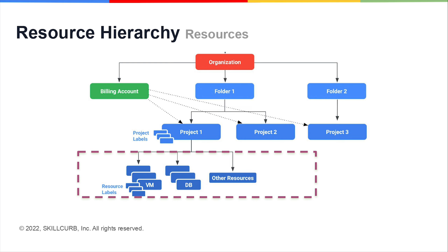At the very bottom level comes the resources themselves — the fundamental building blocks of all cloud services. Every resource has a single parent. You can specify the parent resource's configuration policies and access control rules, and the child resources inherit the parent resource's settings for policies, identification, and access management.